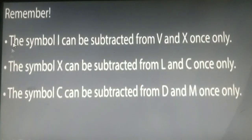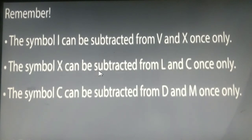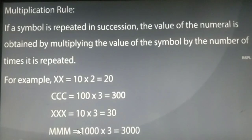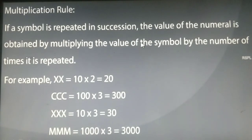Now children, remember: the symbol I can be subtracted from V and X once only. The symbol X can be subtracted from L and C once only. The symbol C can be subtracted from D and M once only. Now, the multiplication rule — this is again very important. If a symbol is repeated in succession, the value of the numeral is obtained by multiplying the value of the symbol by the number of times it is repeated.